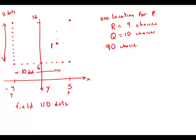Well, how many P's can we pick? Well, we could pick any dot in the entire field to be P. So that means that at any of those 110 dots, we have 90 possible triangles. And so 110 times 90 is 9900. And this is answer choice C.